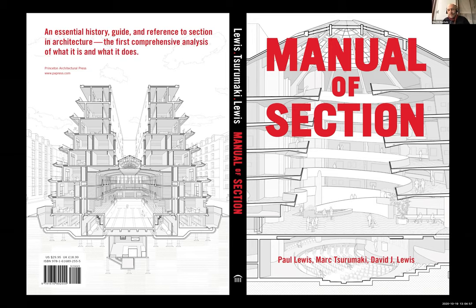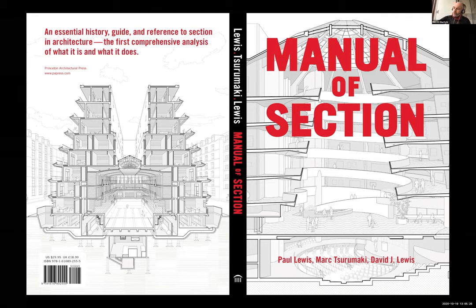It is quite something to have an architectural book focused not on a particular building but on a drawing, to be as popular and successful as the Manual of Section has been — and to have it translated illegally is really the peak of success as far as architectural books go. The book was published in 2017–2018, and it has had an influence not just on David's work but on the emergence of the section as a drawing.